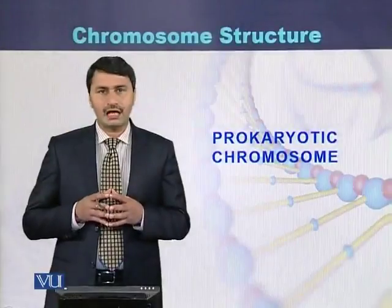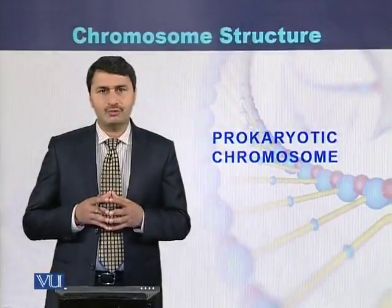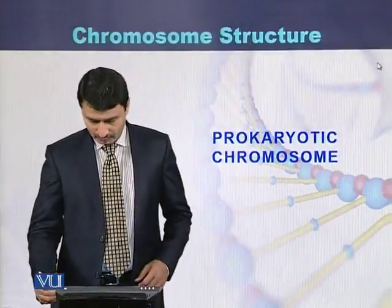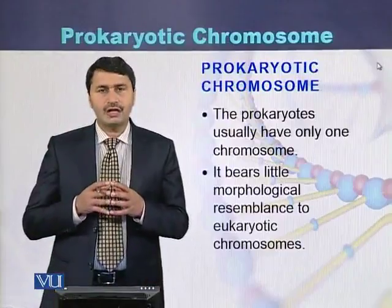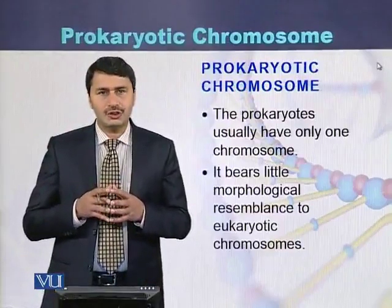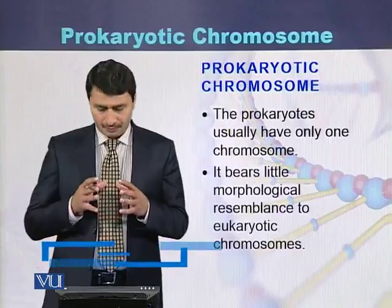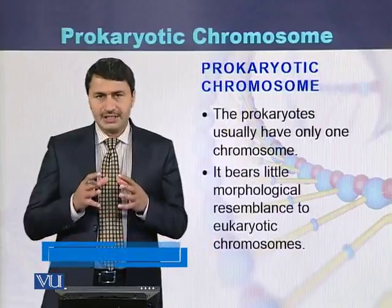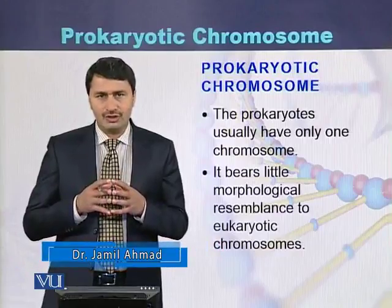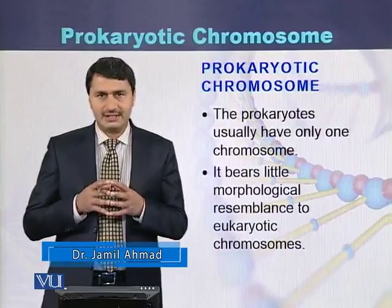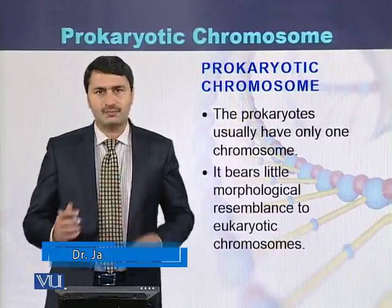Prokaryotic chromosome. Prokaryotes usually have one circular chromosome. It bears less morphological resemblances with the eukaryotic chromosome.